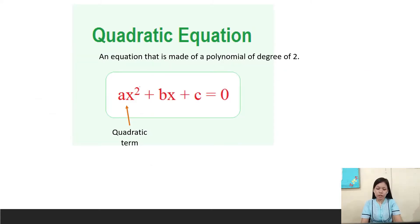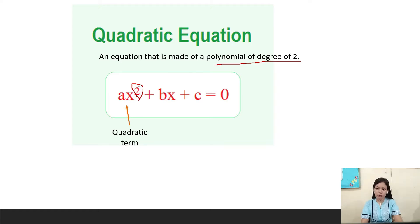Another definition: a quadratic equation is an equation that is made up of a polynomial of degree two. So we have ax² + bx + c = 0, where ax² is the quadratic term with degree of two, bx is the linear term, and c is the constant term.